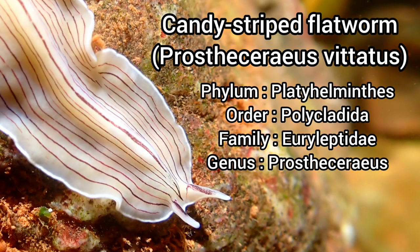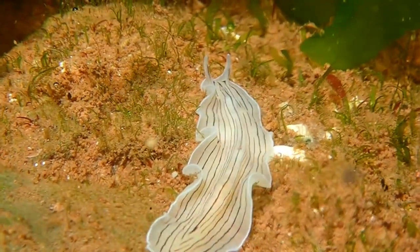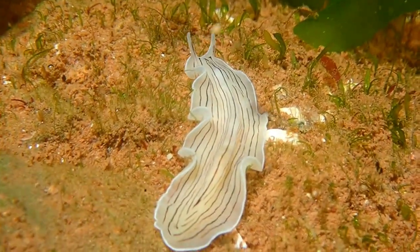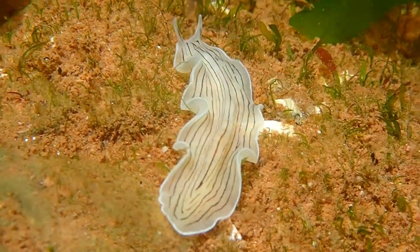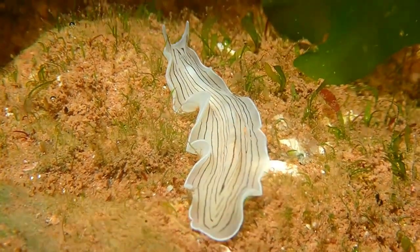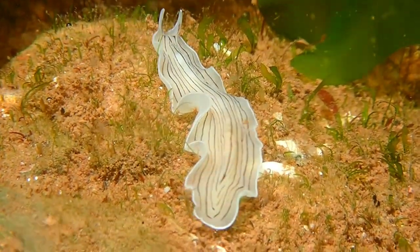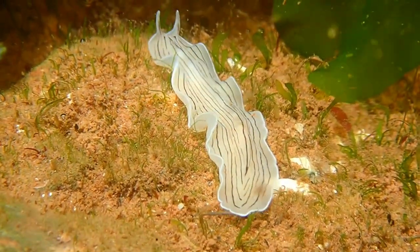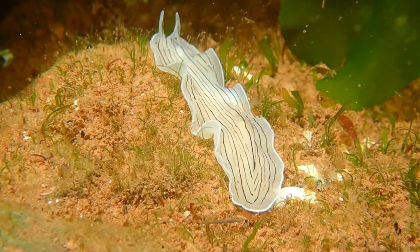The candy-striped flatworm is a species of marine polyclad flatworm that can be found in rock pools in some areas of the UK, easily identified by its cream-coloured body and numerous black stripes, and is a species that grows to a length of five centimetres.